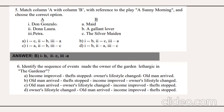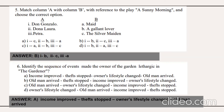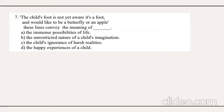The correct option for question six is option A: income improved, theft stopped, lifestyle changed, and the old man arrived. Copy the full option from your question paper exactly as it appears. Question number seven: the child's food is not yet aware it's food and would like to be a butterfly or an apple — these lines convey the meaning of option B: the unrestricted nature of a child's imagination.